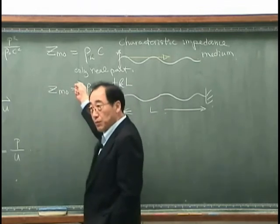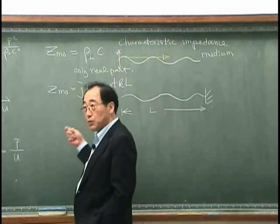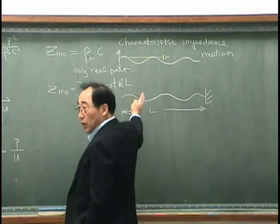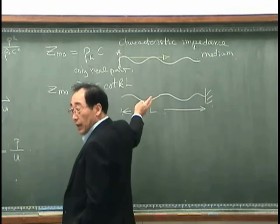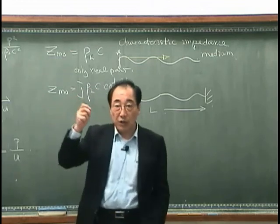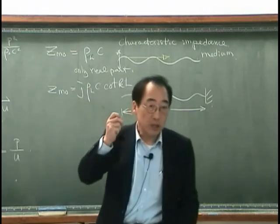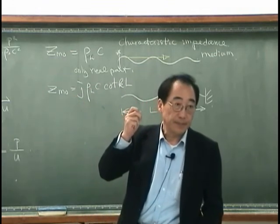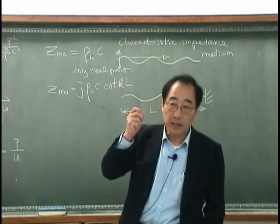So driving point impedance certainly expresses how the wave is propagating, even though that measures the characteristic at one point. That's the significance.